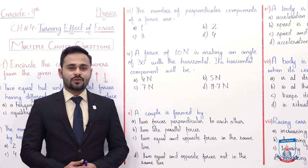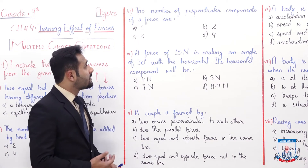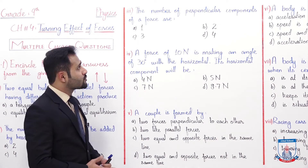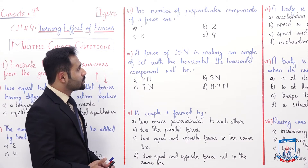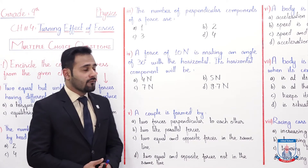MCQ number three: The number of perpendicular components of a force are — A: 1, B: 2, C: 3, and D: 4.